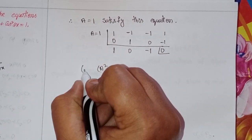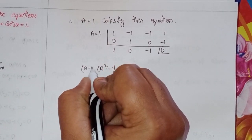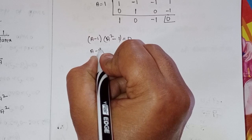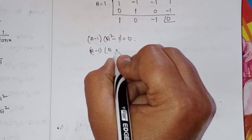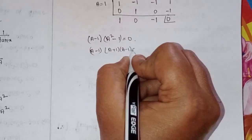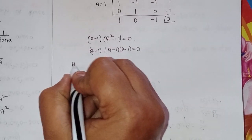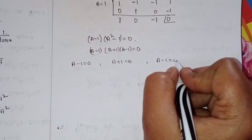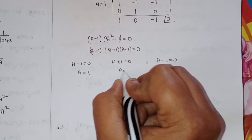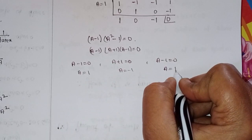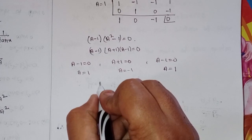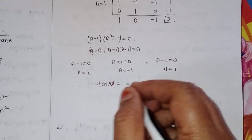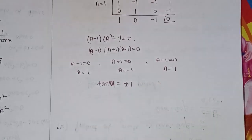So one factor is (a minus 1), and a² minus 1 can be written as (a plus 1)(a minus 1). Therefore: a minus 1 equal to 0 gives a equal to 1; a plus 1 equal to 0 gives a equal to minus 1. So a, meaning tan x, equals plus or minus 1.